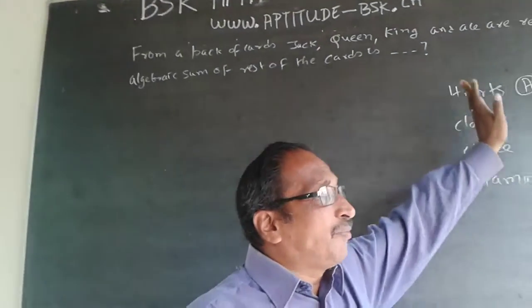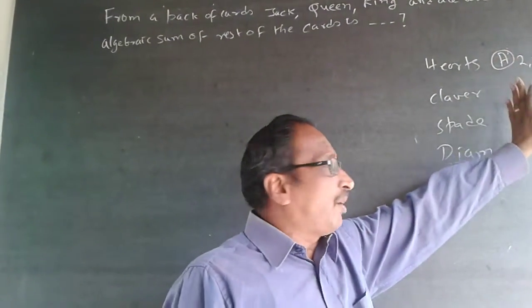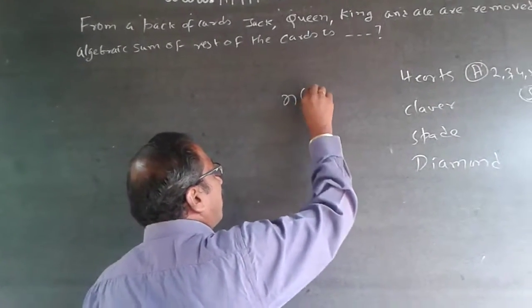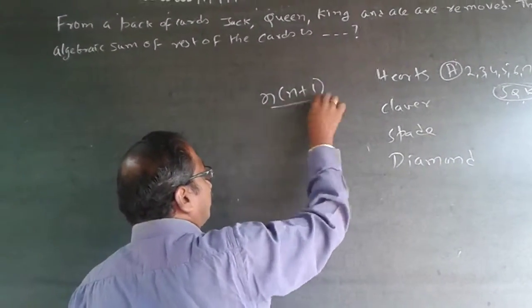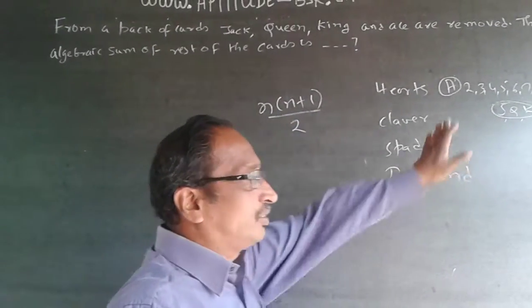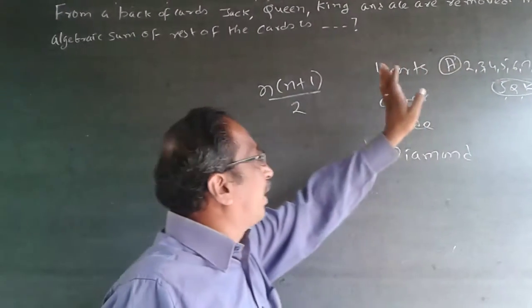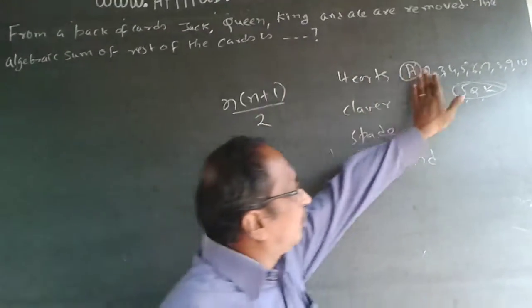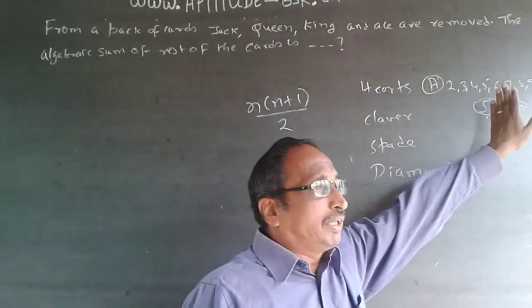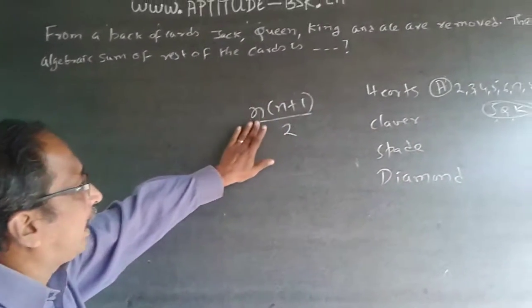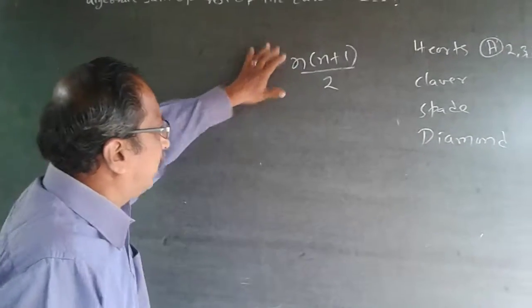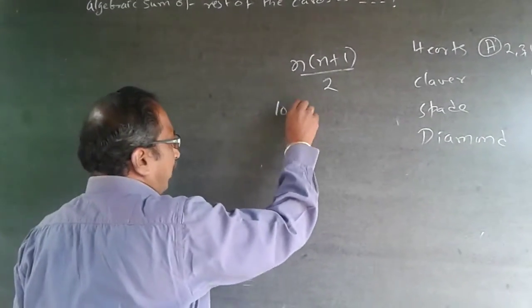Sum of n numbers starting from 1 will be n into (n+1) by 2. Don't get confused because 1 is not there. I am presuming there are 10 cards here, so I will take n as 10. Don't take n as 9, then it will go wrong. Take n as 10, so it will be 10 into 11 by 2.